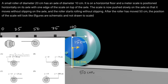Let us consider two key points on this body. The diameter of the roller is 20 centimeters, so from the ground to the roller center is 10 centimeters. The diameter of the axle is 10 centimeters, so the axle radius is 5 centimeters. Therefore, from the ground to the top of the axle where the scale rests is 15 centimeters.